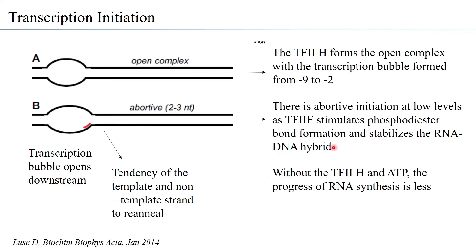It is very important to note that without TF2H and ATP, the progress of RNA synthesis is less — these two play an important role.